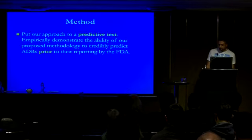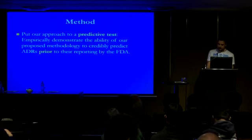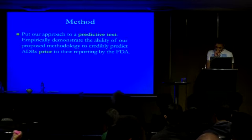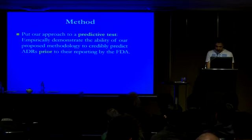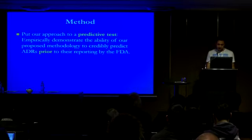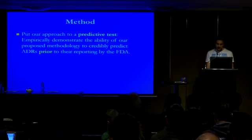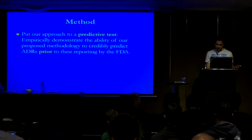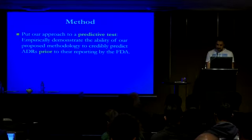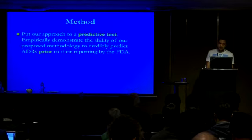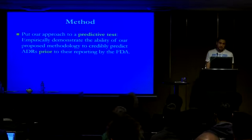We decided to subject our approach to a predictive test — that is, we empirically demonstrate how our system can predict ADRs prior to their reporting by the FDA. Since we cannot prove our predictions on future ADRs, we emulated our "crystal ball" future-seeing powers by detecting ADRs reported by the FDA through looking into online messages published prior to the first announcement. Our method manages to find these ADRs sometimes years prior to the first announcement.